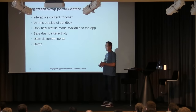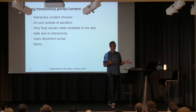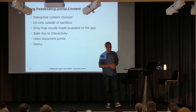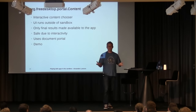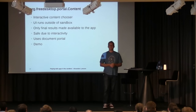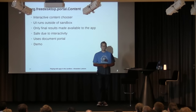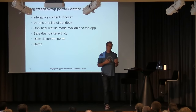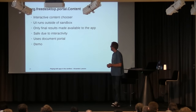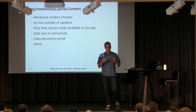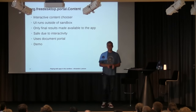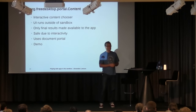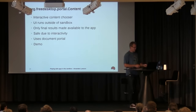Then we have the content chooser portal, which is similar to the file selector but has a wider range of content sources. It could show a webcam UI letting you take a photo, or embed your photo library from another app. All of this runs outside the app. At the end it uses the document portal to create a document handle and passes it back to the app, so it can load the content. It's basically safe for the same reason the file selector was safe.